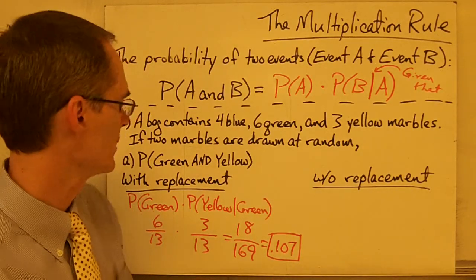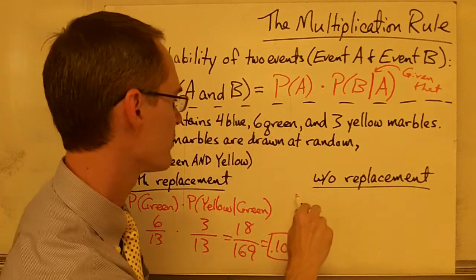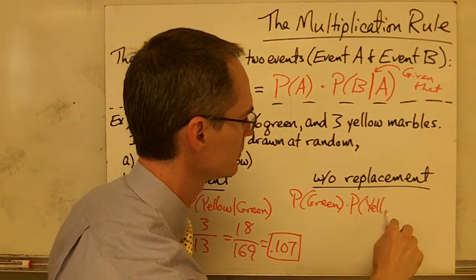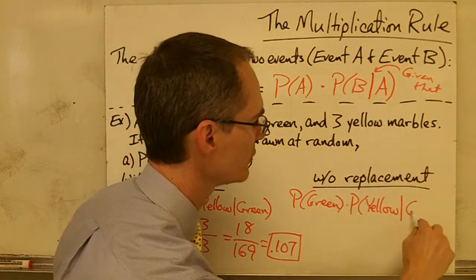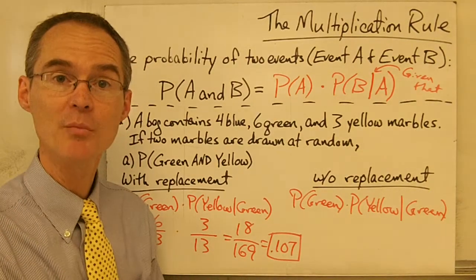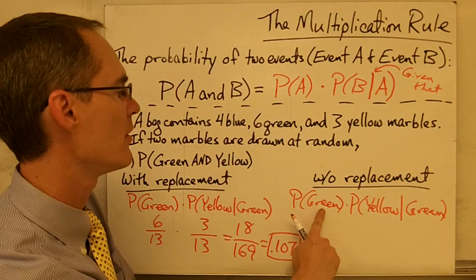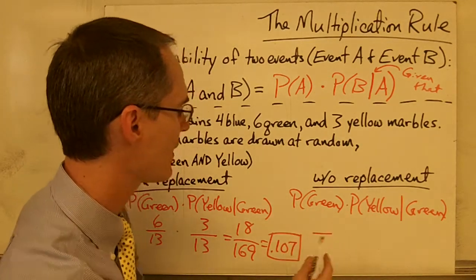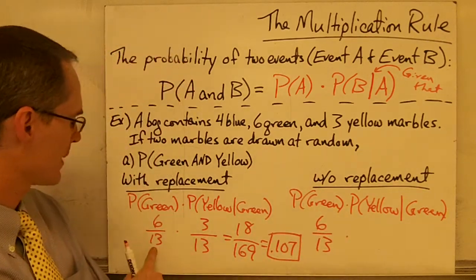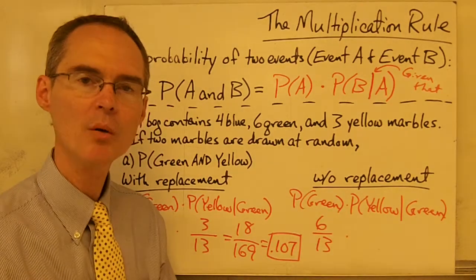Now let's take a look at what happens if I do it without replacement, using the same formula: the probability of drawing a green marble and drawing a yellow marble equals the probability of drawing a green marble times the probability of drawing a yellow marble, given that I've already drawn a green marble. Except now I'm doing this without replacement — I'm not going to put the first marble back before I draw the second marble.